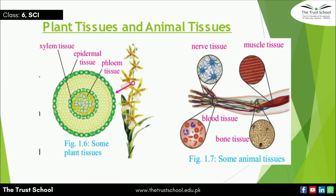When similar types of cells work together, they make tissue. In plant tissues: first, xylem tissue carries water, nutrients, and minerals; second, epidermal tissue gives support and protection and makes a covering; third, phloem tissue is responsible for the transportation of food. In animal tissues: nerve tissue transfers messages; muscle tissue covers the bones and helps in movement; blood tissue carries oxygen and other nutrients towards the muscles; and bone tissue makes bones.